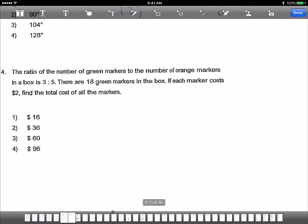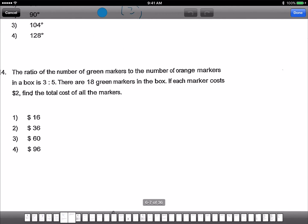The ratio of the number of green markers to the number of orange markers is 3 is to 5. There are 18 green markers in the box. If each marker costs $2, find the total cost of all the markers. Now there are 18 here. Here is times 6. Here is times 6. 30. Total number of markers is 48. Markers times 2. 96. Answer 4.